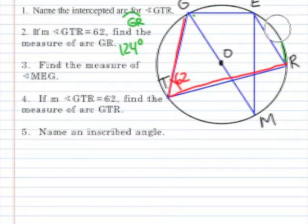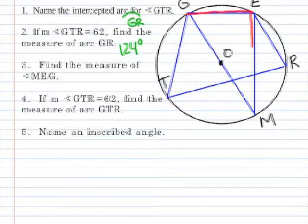Find the measure of angle MEG. MEG is this angle right here. We have another inscribed angle where E is the vertex. If I look on the other side of the circle, I have an arc that goes from G through T all the way to M. That's the intercepted arc of the inscribed angle. So I need to try to figure out what that is.